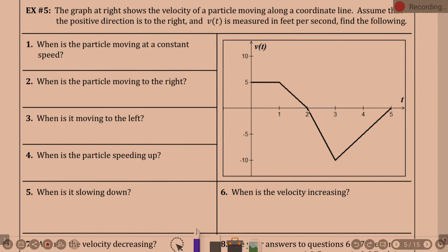The next 28 questions are about this material. Always pay attention to what type of graph it is. This is a velocity versus time graph, not a position graph. The velocity of a particle moving along a coordinate line — assume positive direction is to the right, v of t measured in feet per second. When is the particle moving at a constant speed? The velocity is constant from 0 to 1. You can write it as 0 < t < 1 or in interval notation.